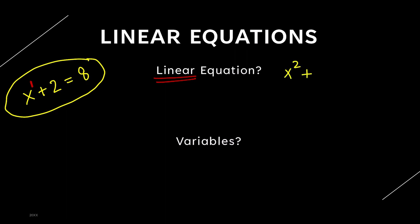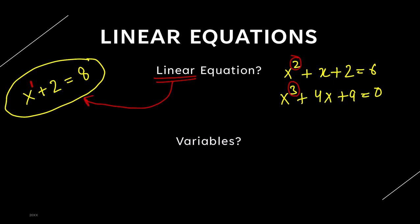But if the power of the variable is higher — suppose the equation has a maximum power of 2 and not 1 — it will not be a linear equation but a quadratic equation. And suppose there is another example: x cubed plus 4x plus 9 is equal to 0. Is it a linear equation? No, because the maximum power is now more than 1 — that is 3. So it is not a linear equation; it is a cubic equation. The linear equation is where the maximum power of the variable is 1, and that is all you have to know.